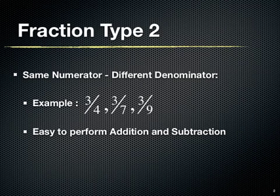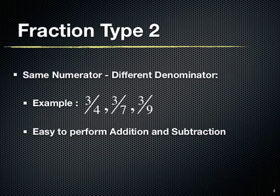The below example illustrates this type of fraction. Here, 3 upon 4, 3 upon 7, and 3 upon 9 are this type of fractions. They have same numerator 3 but having different denominators as 4, 7, and 9.